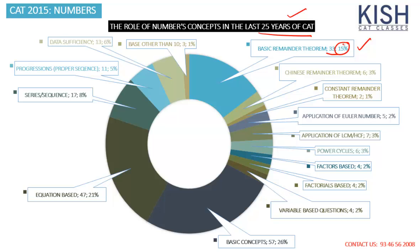The name itself suggests 'basic' remainder theorem — it must be very simple for every candidate. There are two types of questions of basic remainder theorem asked in CAT. The second type is the most important one. Out of the 33 questions asked on basic remainder theorems, almost 15 to 16 questions are completely from the second concept that I'm going to teach you.